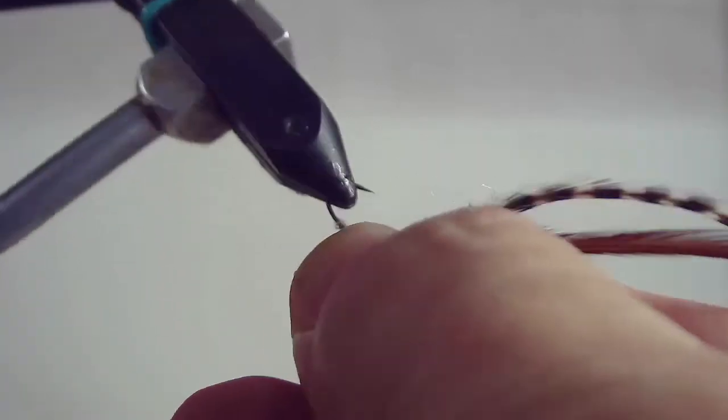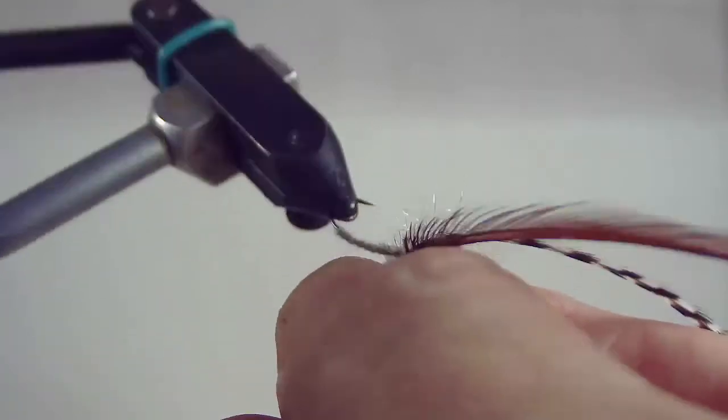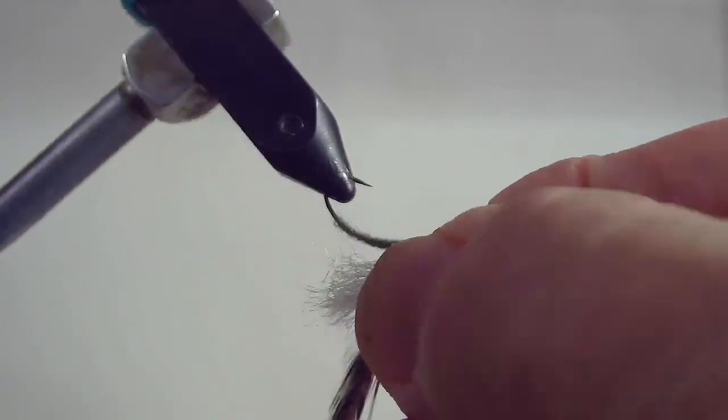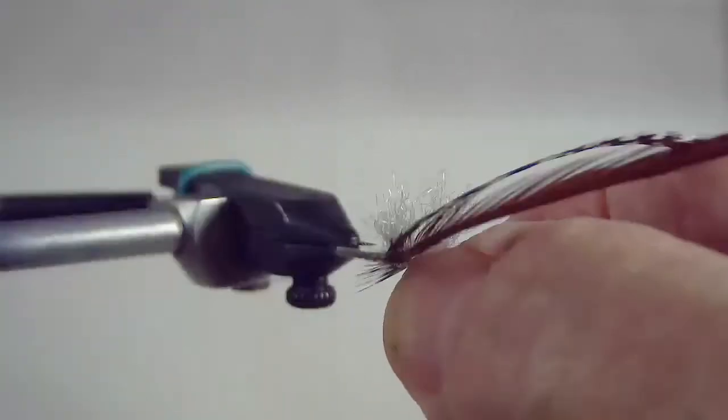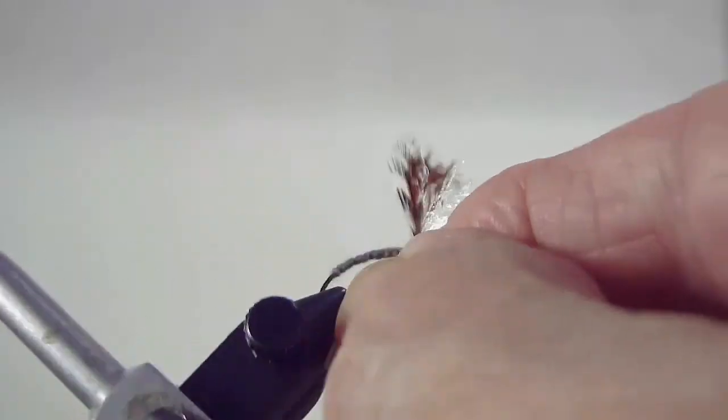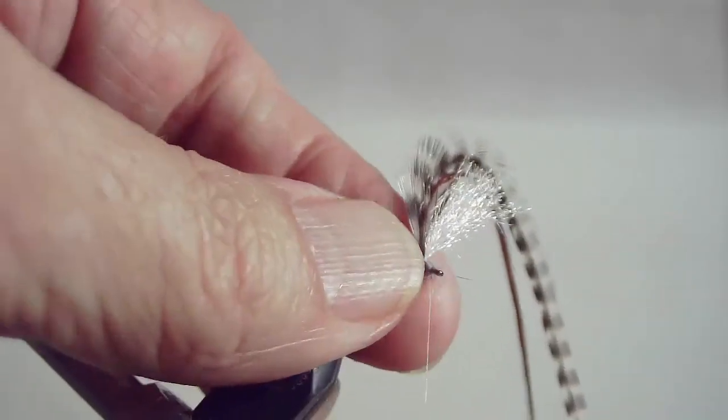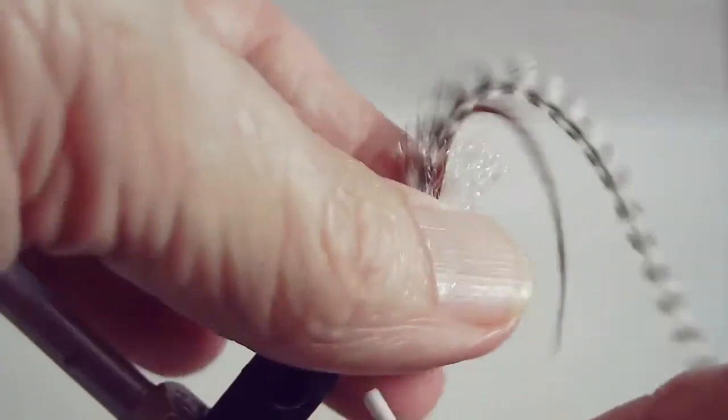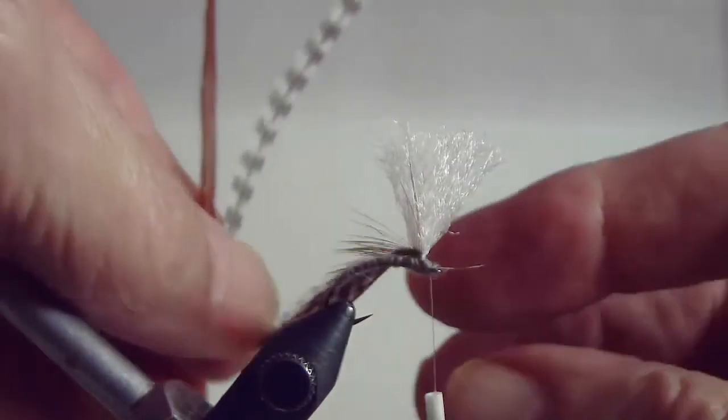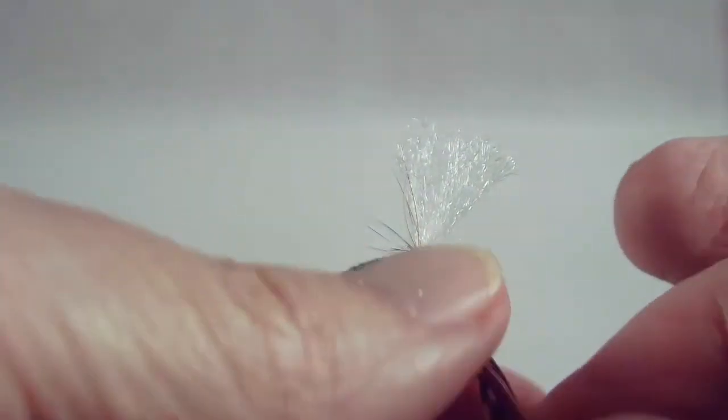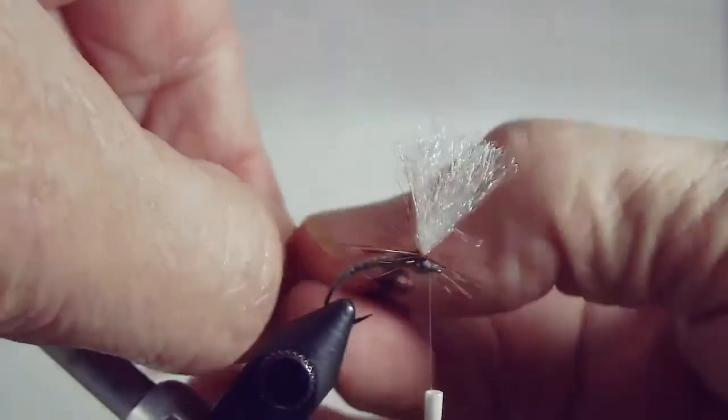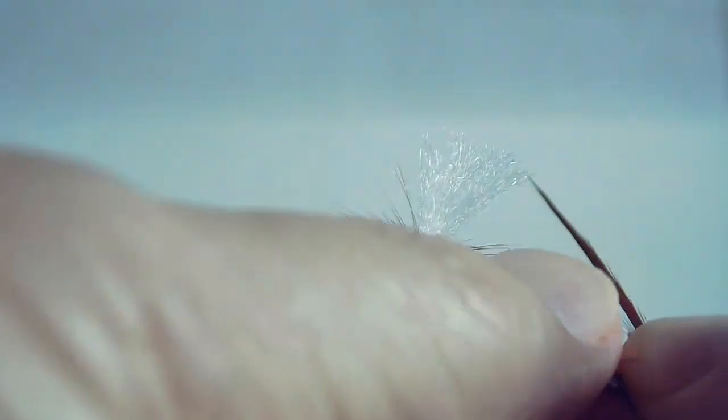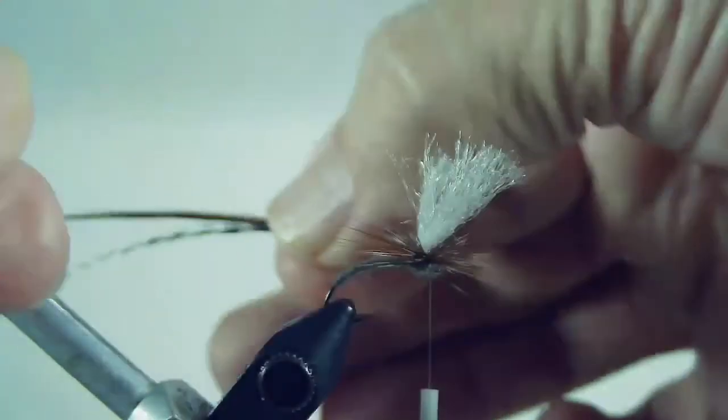Again it's very segmented it's a little thicker on the area that I want to be the thorax that is the body that I want to have in shape. Now it's pretty simple matter of just taking the hackle wrapping it around the wing post that we've created.